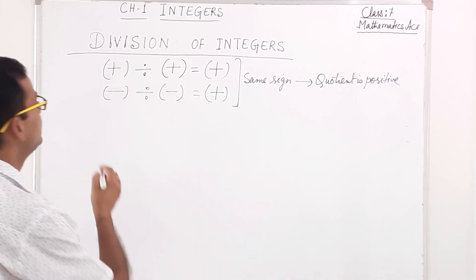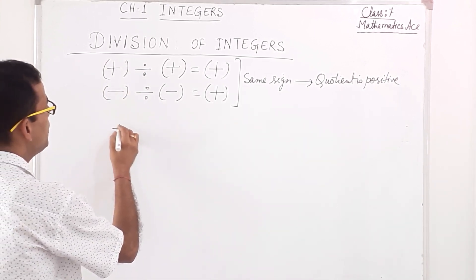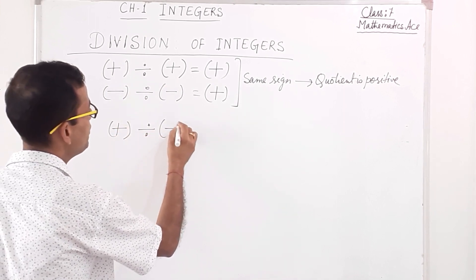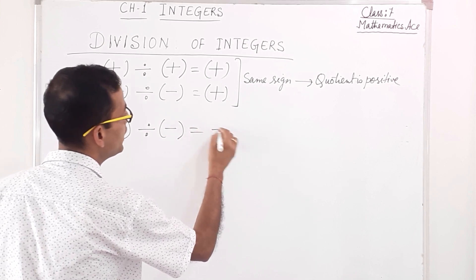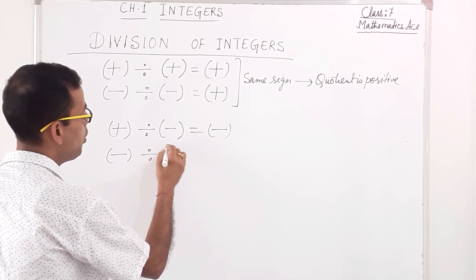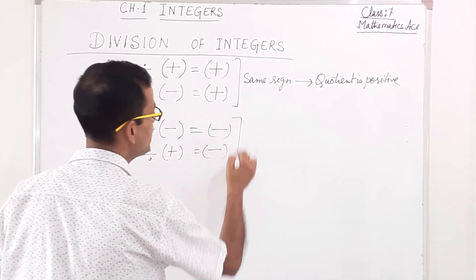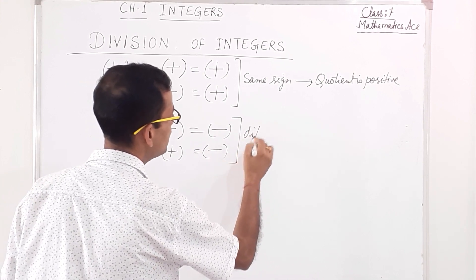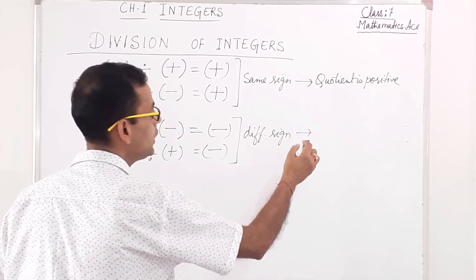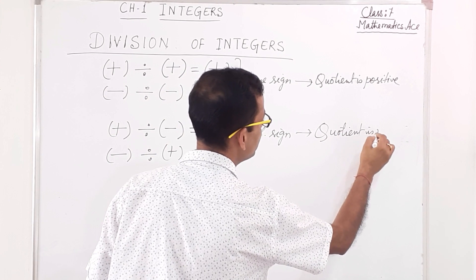And for different signs: if a positive integer is divided by a negative integer, the quotient is negative. If a negative integer is divided by a positive integer, the quotient is also negative. That means different sign — quotient is negative.